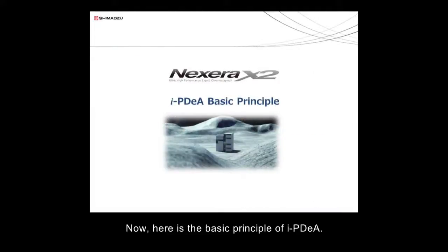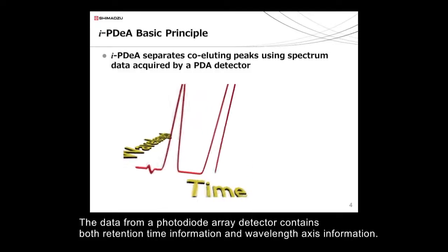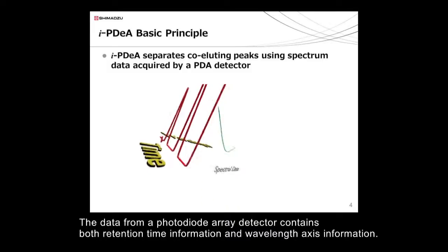Now, here is the basic principle of IPDA. The data from a photodiode array detector contains both retention time information and wavelength axis information.